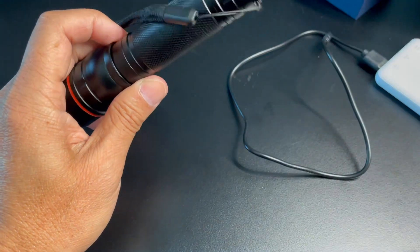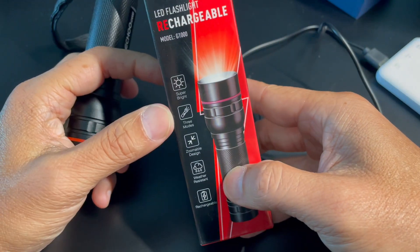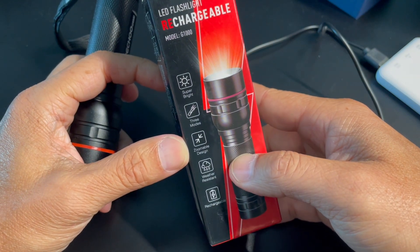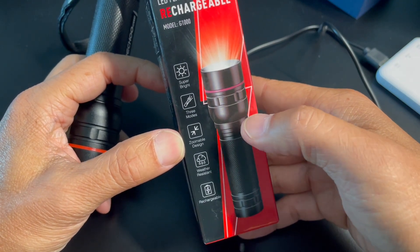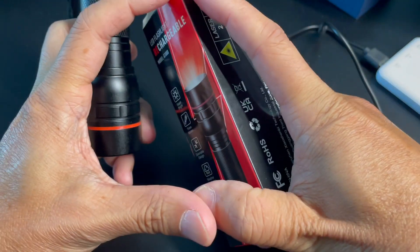This thing is pretty easy to use. Let's check out the specs real quick on this. Super bright, three modes, and I'll show you those modes in a second. Zoomable design, which means you can make the circle, the concentration, bigger or smaller.